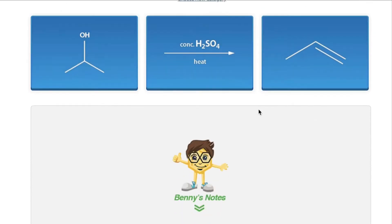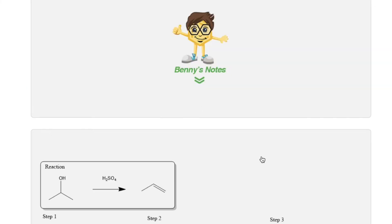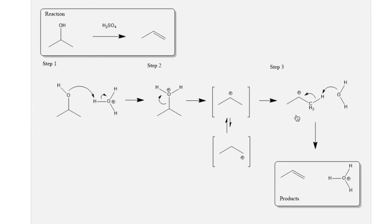Let's take a look at the reaction mechanism. To start the mechanism, concentrated acid will react with the solvent, water, to form a hydronium ion, H3O+. This will serve as a catalyst for the reaction.